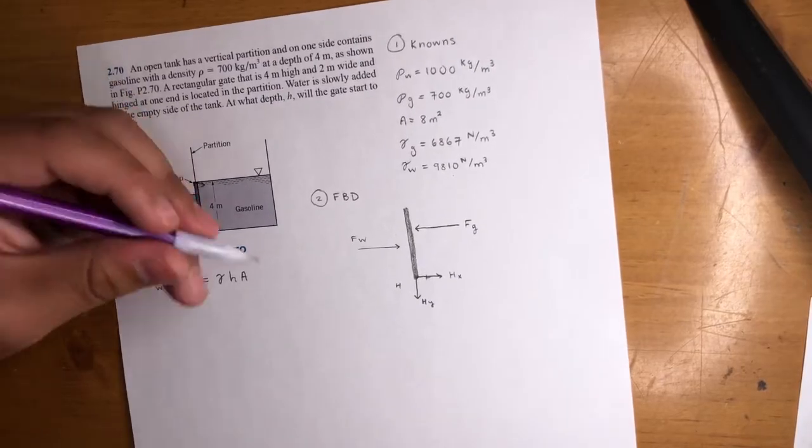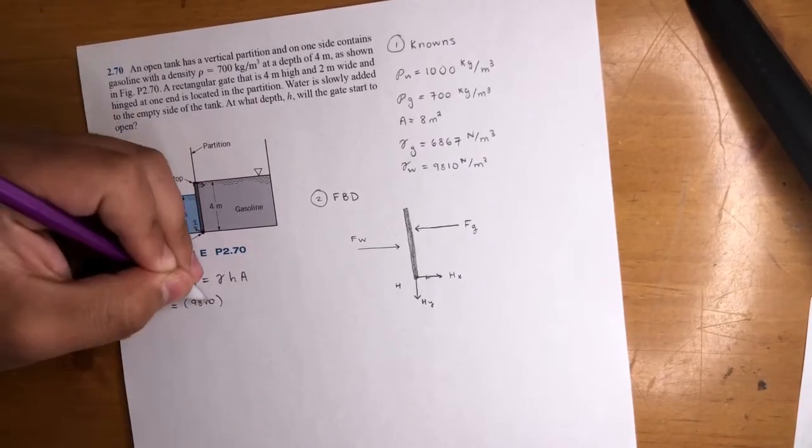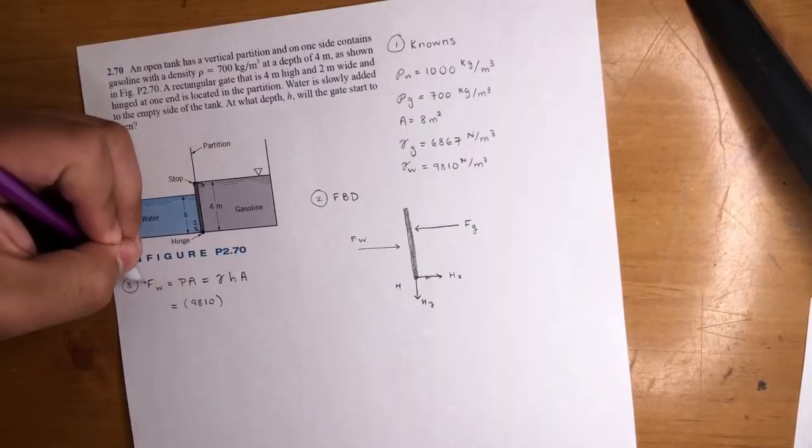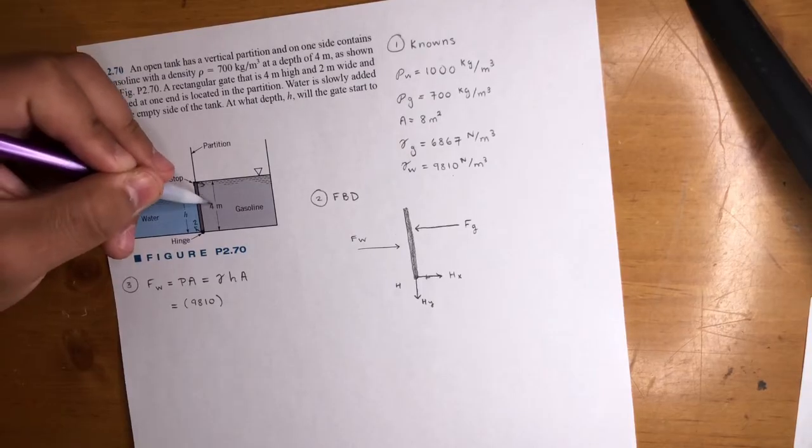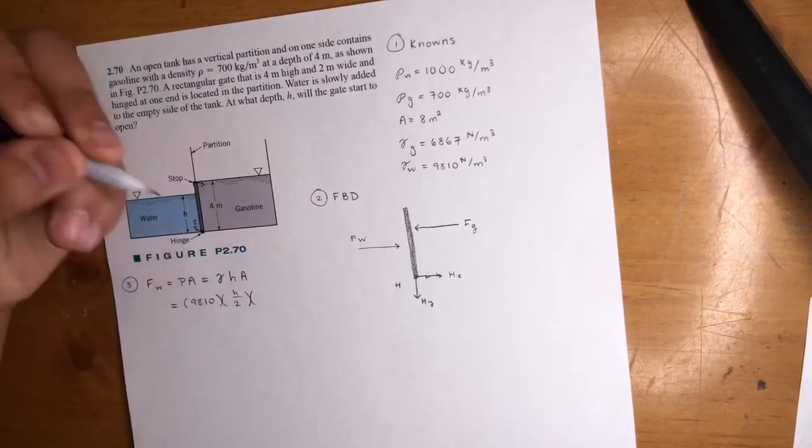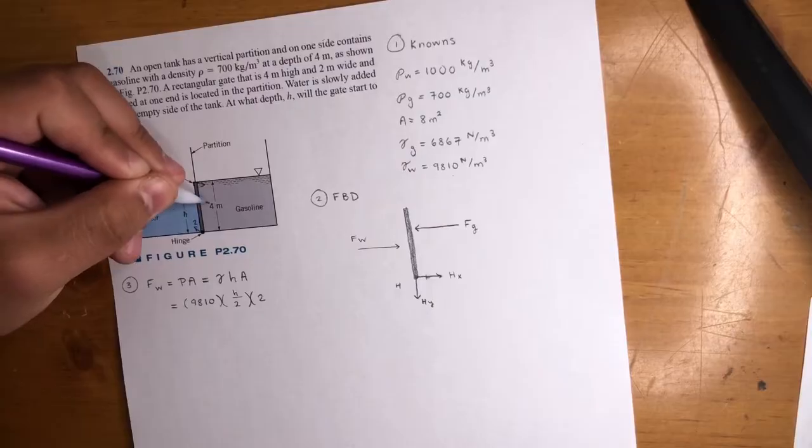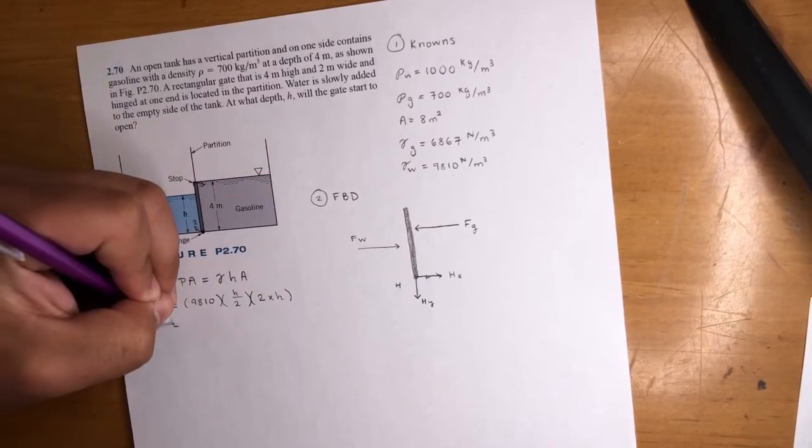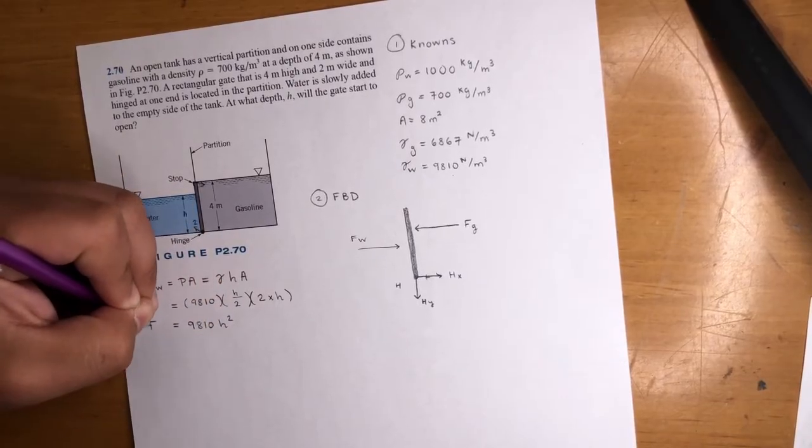So this is gamma H A. Now, again, this one's pretty simple. We got gamma. We know that one. That one's 9810, right? It's water. Newton's per meter cubed. You want all your units lined up. Your height, you don't know. And again, remember this height, when you're finding the force, the height is just the halfway distance between the water once it starts to open. So it's not four over two. It's H over two. We're looking for H. We'll put H over two times area. The area is going to be two, right? The width is always the same. Now times your height again. It's not four. It's just height because we're looking for that H. So cool. If you do the math here, those twos cancel out. So you'll get 9810 H squared. This is your force of water.